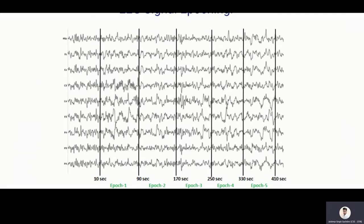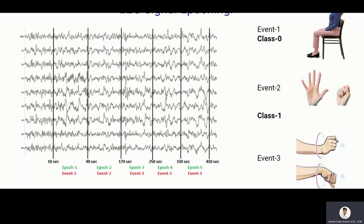And then from 90 to 170 seconds, event 2 happened. So what we are doing is we are extracting this 10 to 90 second part and similarly 90 to 170 second part. And we get some small chunks of signals. So when we divide it, you can see these are different events.